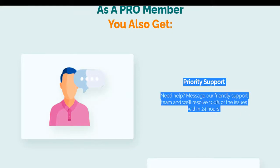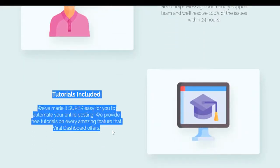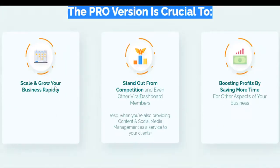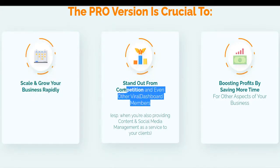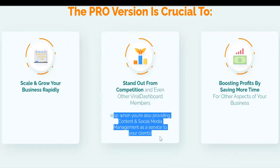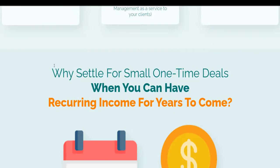As a pro member you also get priority support. Message our friendly support team and we'll resolve 100% of issues within 24 hours. Tutorials are included — we've made it super easy for you to automate your entire posting. Beta users reported that the pro version is crucial to scale and grow your business rapidly. Stand out from competition, especially when you're also providing content and social media management as a service to your clients.